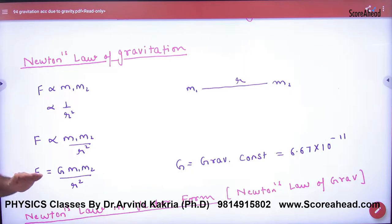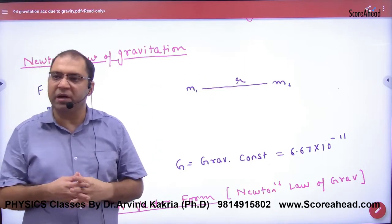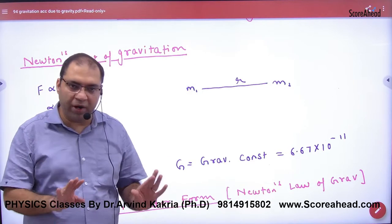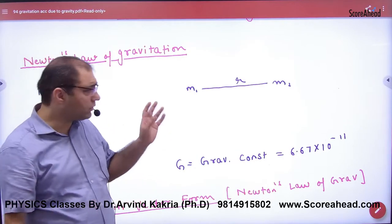Newton's law of gravitation is simple. There are two masses m1 and m2. The shape of the masses doesn't matter. This law is valid for point masses. If you have a sphere, you have to take the center of mass.